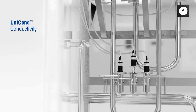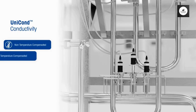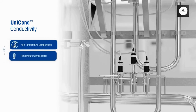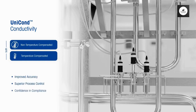Why is conductivity measurement critical? USP 645 requires uncompensated conductivity and temperature measurements to determine the final water quality, whereas USP 644 and 1644 recommend the use of compensated conductivity and temperature measurements for process control. A digital conductivity sensor can record both compensated and uncompensated conductivity as well as temperature on a single sensor to meet all requirements.